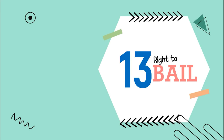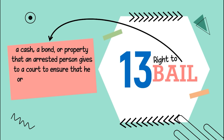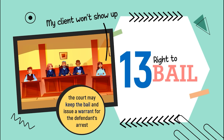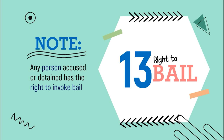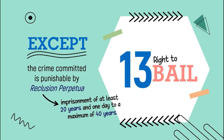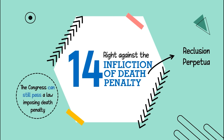Number thirteen, the right to bail. Bail is cash, bond, or property that an arrested person gives to a court to ensure he or she will appear in court when ordered to do so. If the defendant doesn't show up, the court may keep the bail and issue a warrant for the defendant's arrest. Any person, accused or detained, has the right to invoke bail, except when the crime is punishable by reclusion perpetua — imprisonment of at least 20 years and one day to a maximum of 40 years — and the evidence of guilt is strong. Next, the right against the infliction of death penalty. The 1987 Philippine Constitution abolished the death penalty, reduced to reclusion perpetua, but with a reservation: Congress can still pass a law imposing death penalty for heinous crimes like murder and rape.